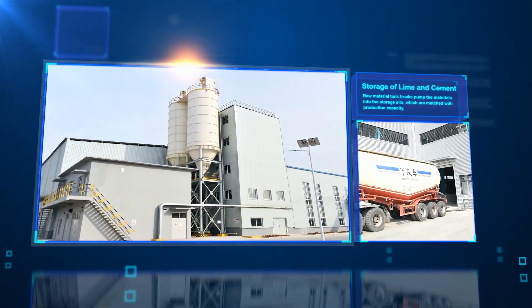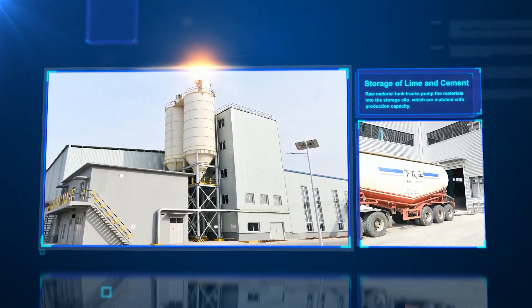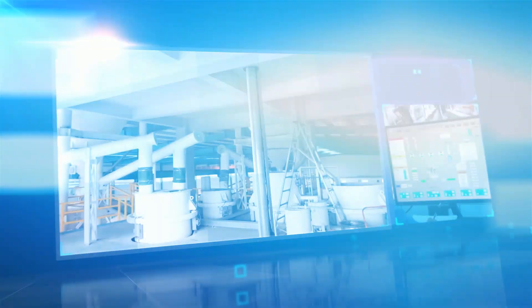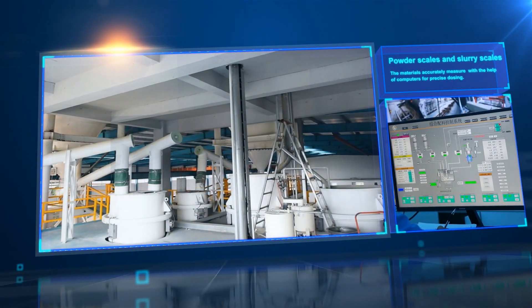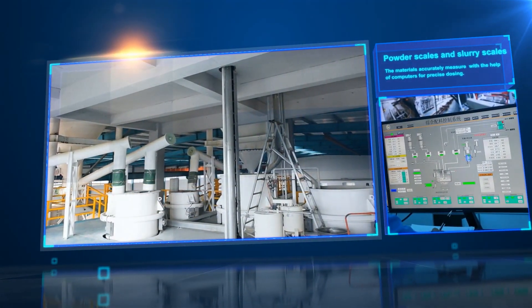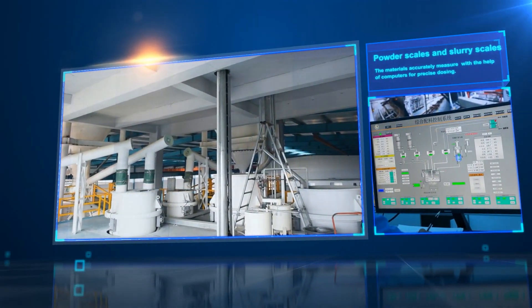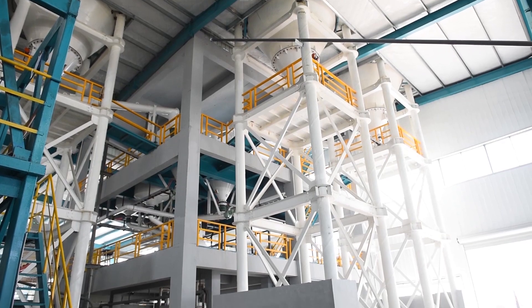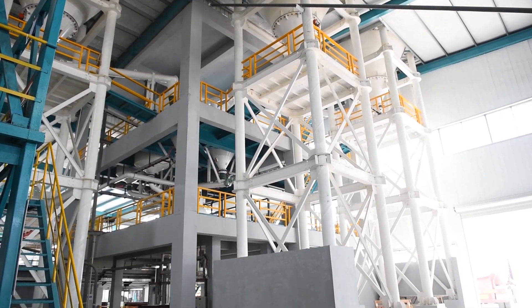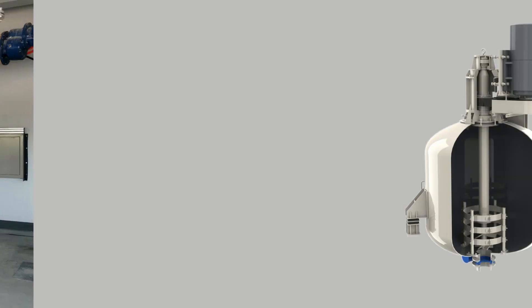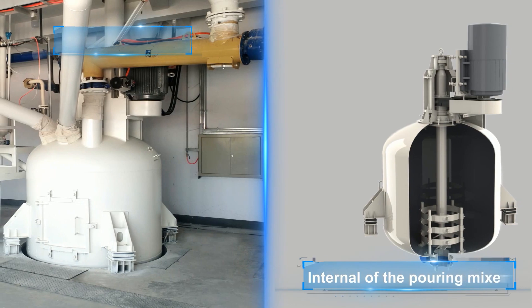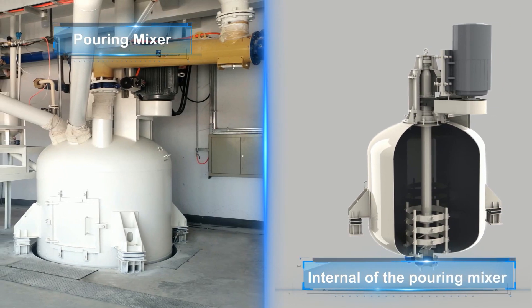The raw material preparation area is equipped with lime and cement silos, raw material scales and metering devices. The measured raw materials are transported to the pouring mixer.